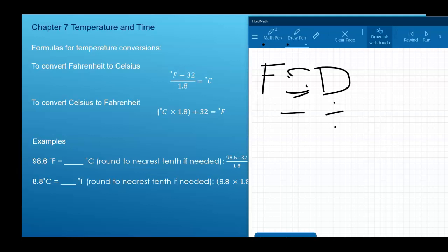With Celsius to Fahrenheit, I memorize CMA. You take Celsius, you multiply, and then you add. So whether you're subtracting or adding, it's always 32. Whether you're dividing or multiplying, it's always 1.8.